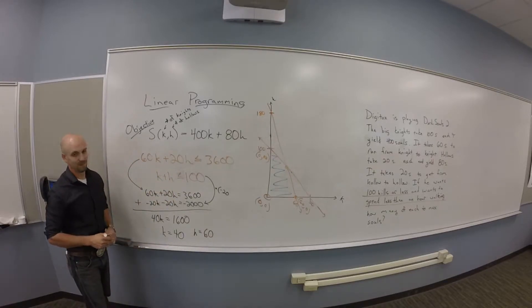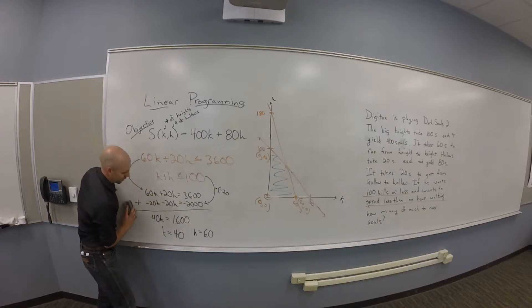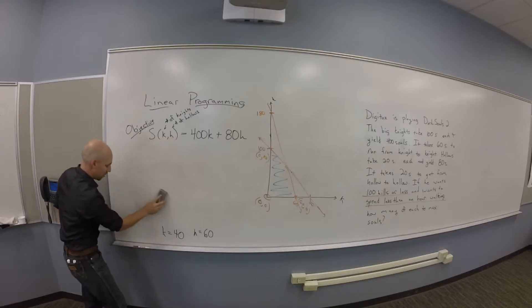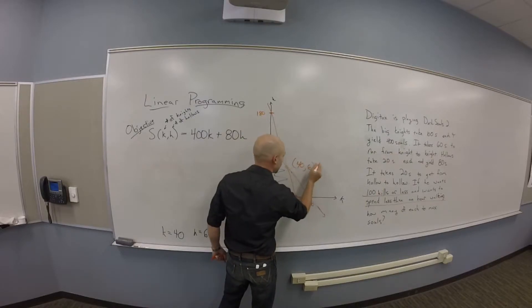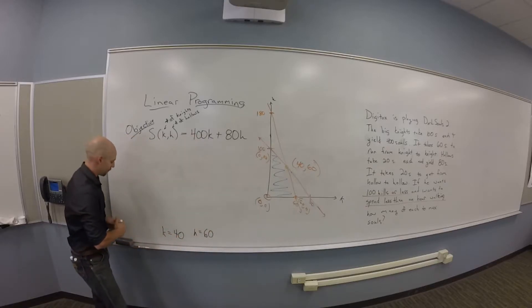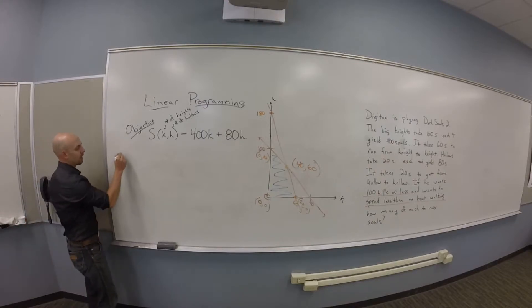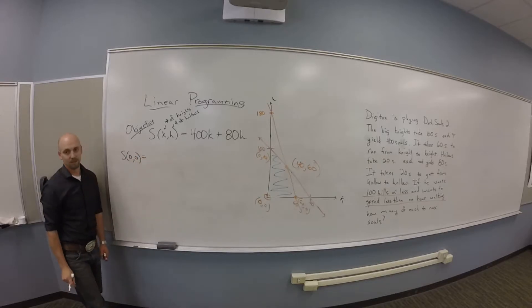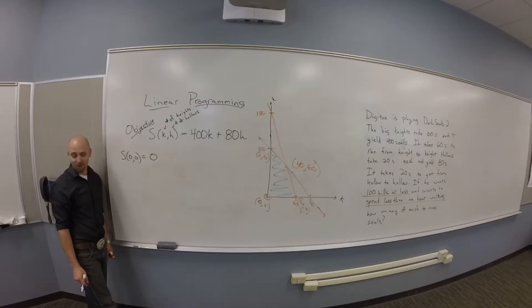Am I done? We have to put it in the thing. We've got to put them all in. Where am I putting things? Into our objective function. Those are my four interesting points. I need S at zero, zero, is zero. If you kill nothing, you get nothing. This is a horrible statement but incredibly true in video games.